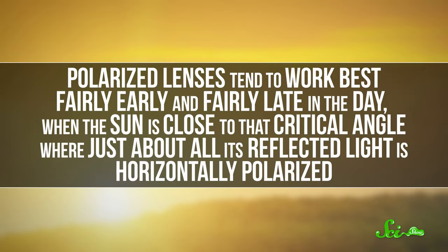Since we were saying that glare was vertically polarized, we said that horizontal molecules absorb vertically polarized light, which is not the case. What is true is that polarized lenses tend to work best fairly early and fairly late in the day, when the sun is close to the critical angle, where just about all of its reflected light is horizontally polarized. Either way, their ability to block glare without making everything super dark makes polarized sunglasses pretty useful.